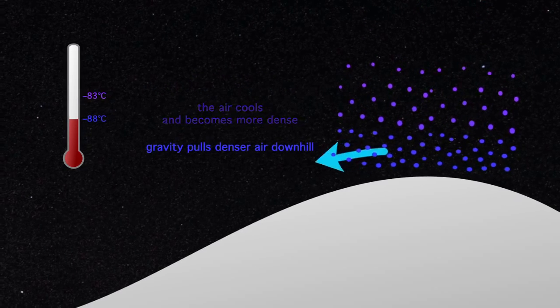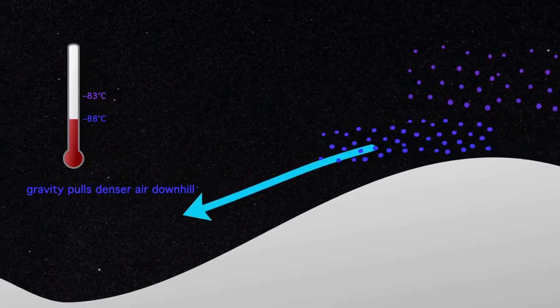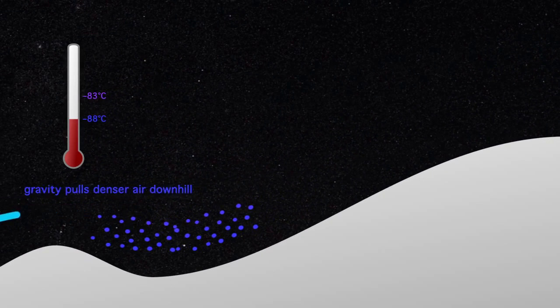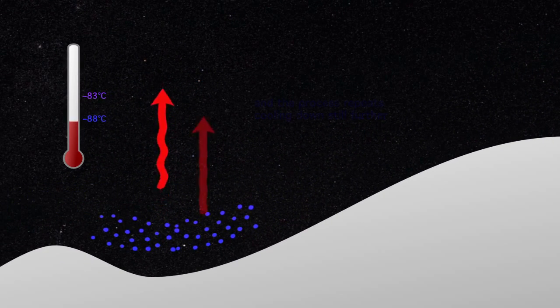This lower layer that's getting very cold under the clear sky conditions is denser, and it starts to slide down this huge dome of Antarctica.